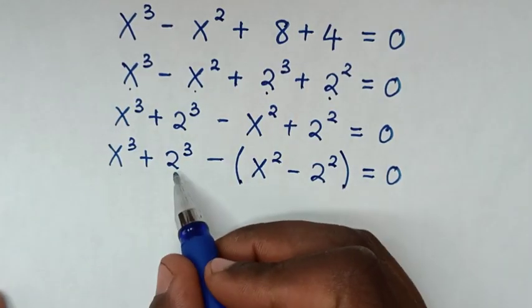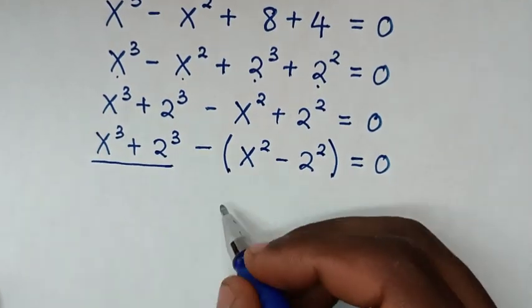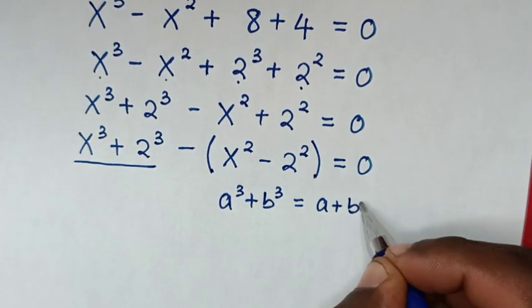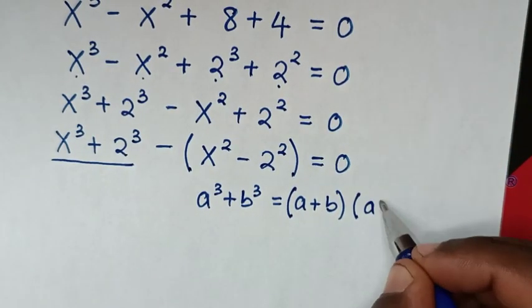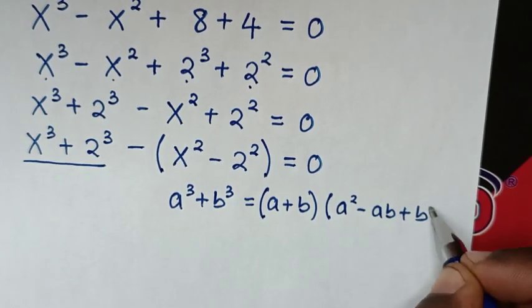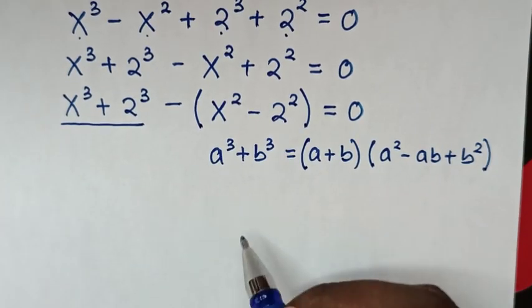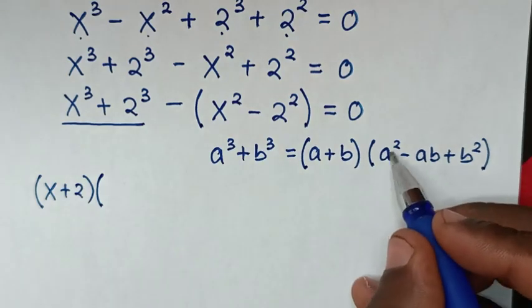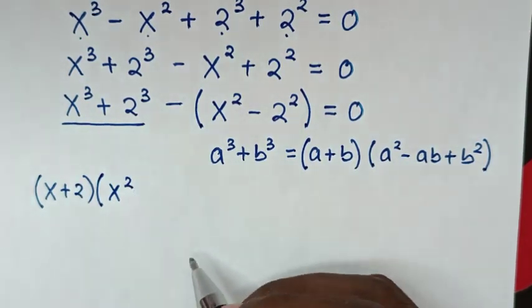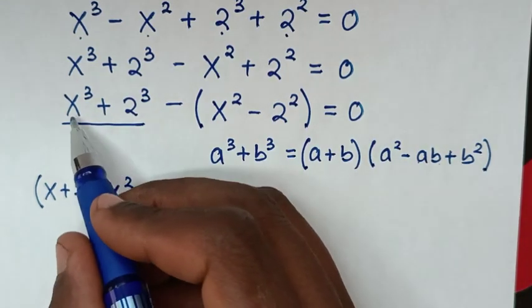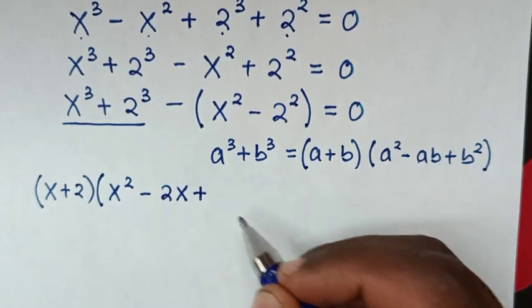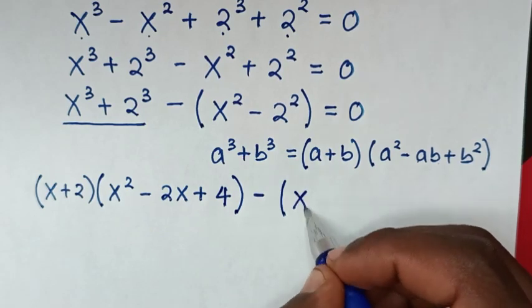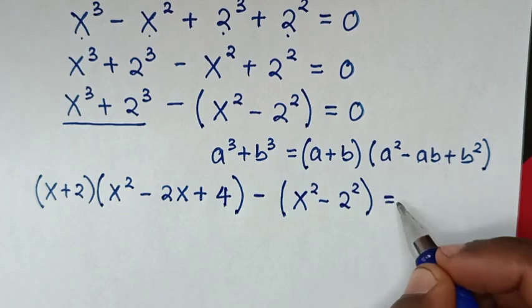From here, x cubed plus 2 cubed is in the form of a cubed plus b cubed, which equals bracket a plus b bracket times bracket a squared minus ab plus b squared bracket. So it becomes bracket x plus 2 bracket times bracket x squared minus 2x plus 4 bracket.